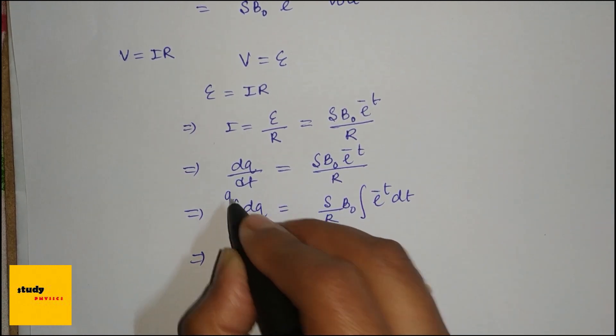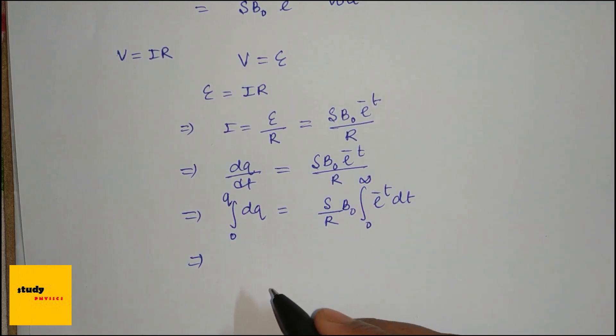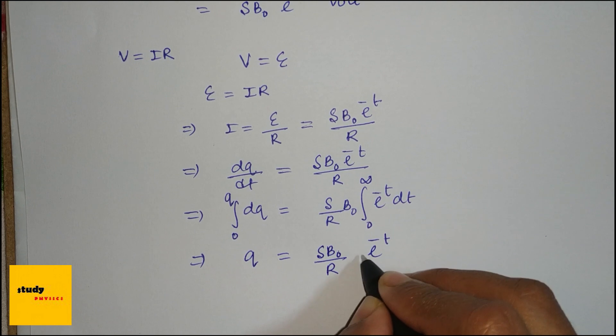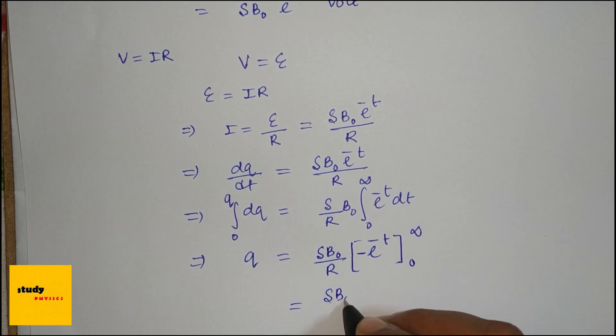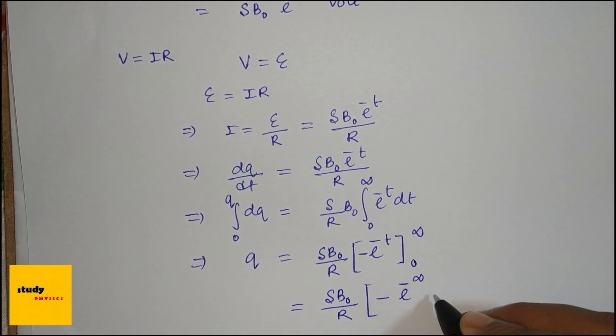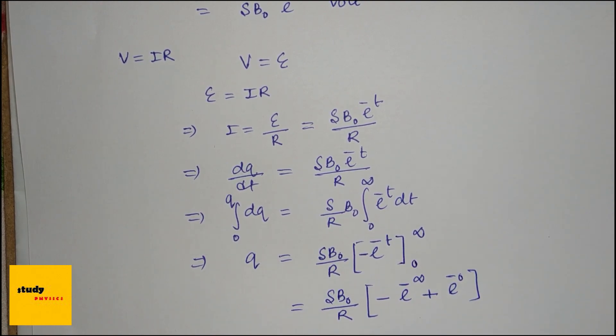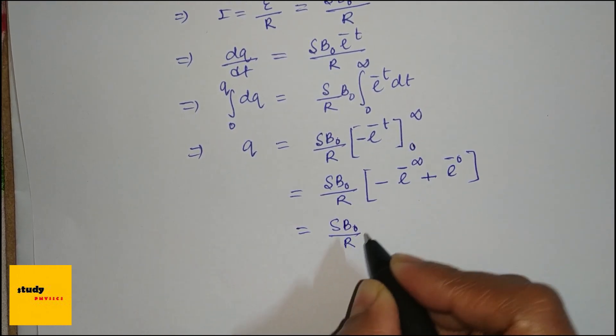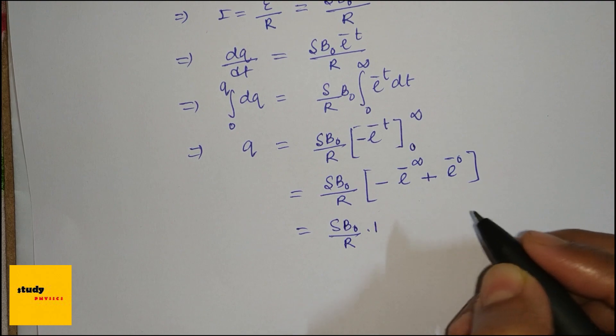Integrating from 0 to q on the left side and 0 to infinity on the right side: q = (S·B₀/R)[e^(-t)]₀^∞ = (S·B₀/R)[-e^(-∞) + e^(0)] = (S·B₀/R)·1.